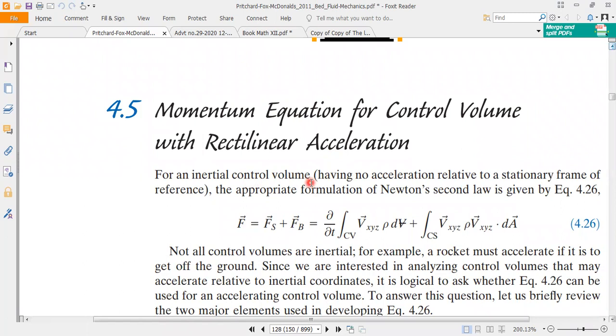For an inertial control volume, the appropriate formulation for Newton's second law is given by ya wahi jo humne drive kiya tha. Jab hum inertial control volume ki baat kar rahe hote hain ya yun kahte hain ki woh constant speed ke sath move kar rahe hain, acceleration net acceleration zero, no acceleration relative to stationary frame of reference, to tab uski jo equation momentum equation woh is form ki hogi with subscript XYZ for relative velocity.